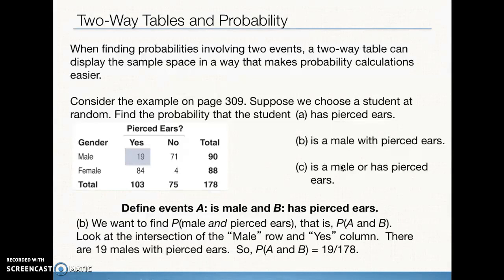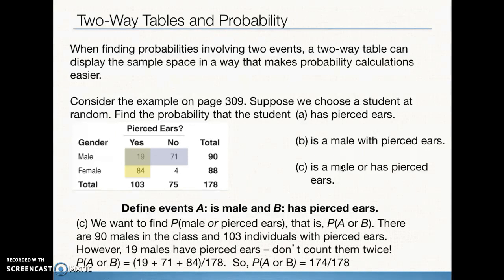For question C, we want the probability of the randomly selected student being male or having pierced ears. We're looking at the total for pierced ears — 103 — and the total for male, which is 90. If we added those two together, we would be over-counting by 19, because there are 19 students that fit in both categories — included in both the 90 and the 103. So instead we add the individual parts: 71 plus 19 plus 84, divided by 178. Another way is 103 plus 90 minus 19 — and that's what we call the general addition rule.